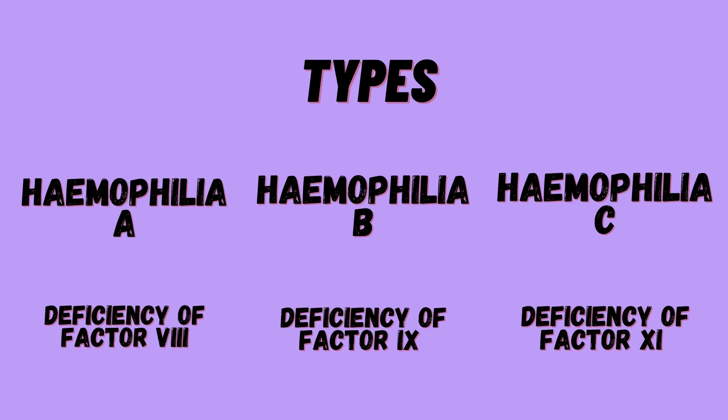Coming to the types of hemophilia: in Hemophilia A there is deficiency of clotting factor 8, while in Hemophilia B factor 9 is deficient. Hemophilia C is characterized by deficiency of clotting factor 11.